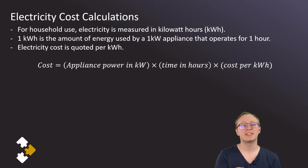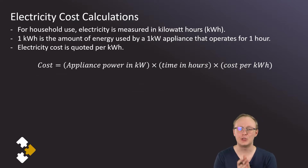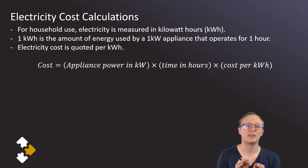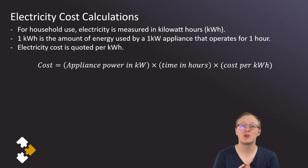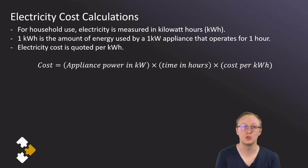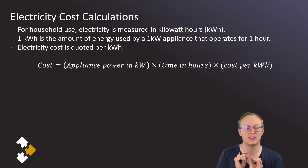Next up is electricity cost calculations. For household use, electricity is measured in kilowatt hours. A kilowatt hour isn't power — it's actually a measure of energy. You can convert kilowatt hours to joules, for example. One kilowatt hour is the amount of energy used by a one-kilowatt appliance that operates for one hour.